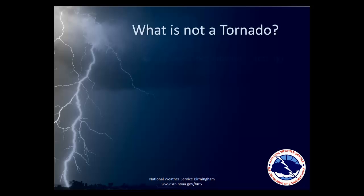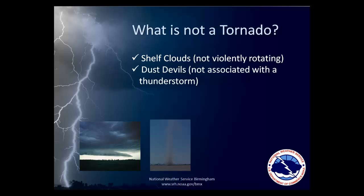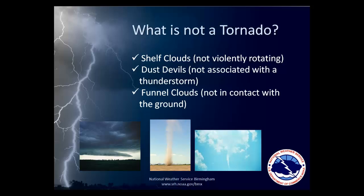Many other cloud formations and even optical illusions can produce phenomena that appear to be tornadoes but aren't. These include shelf clouds associated with thunderstorm outflows, dust devils, and what are known as cold air funnels.